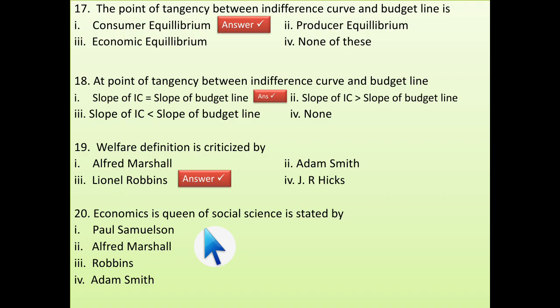Next is welfare definition is criticized by the scientist that is Lionel Robbins who gave scarcity definition of economics. Well, I have discussed all those in the lectures. If you have not seen the video, you can easily access to that. I have mentioned all those links in the description box. Next is economics's queen of social science. It is stated by the scientist Paul Samuelson who gave the growth definition of economics.